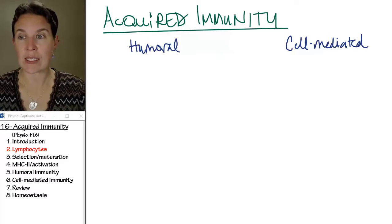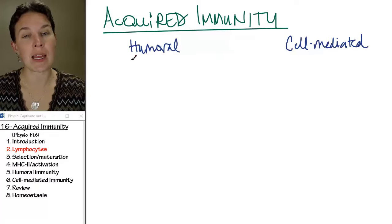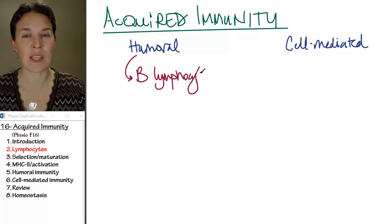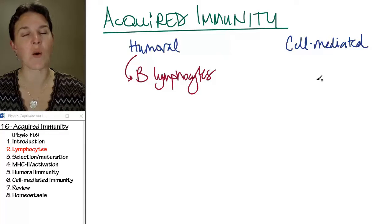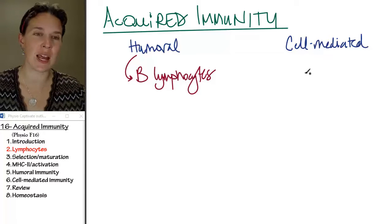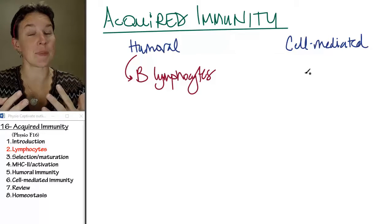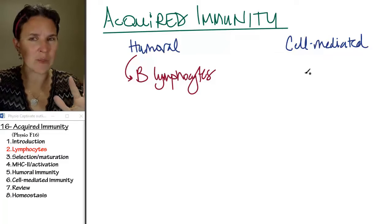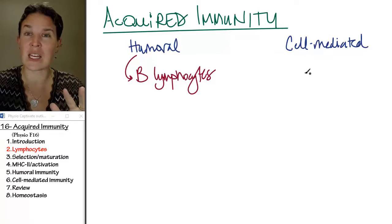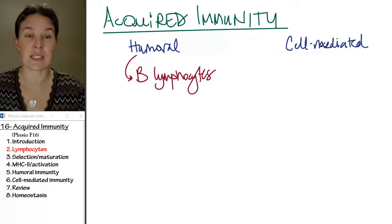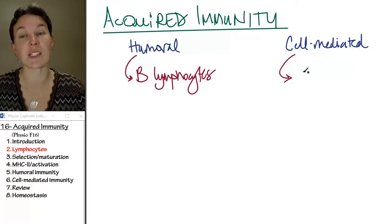Humoral immune response is actually mediated by B lymphocytes — these are the guys primarily involved. Just like we tried to separate innate immunity and acquired immunity and learned that's not really happening, separating humoral immunity and cell-mediated immunity has lots of overlap. But in general, the humoral immune response deals with B lymphocytes, whereas the cell-mediated response deals with T lymphocytes.